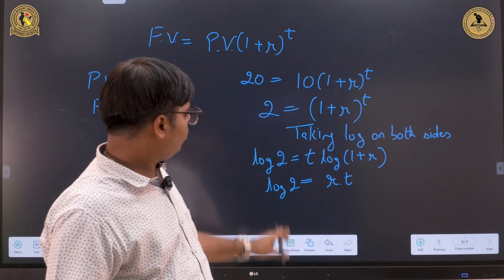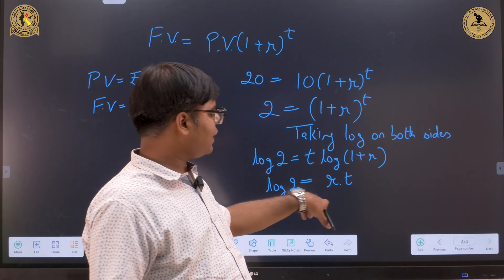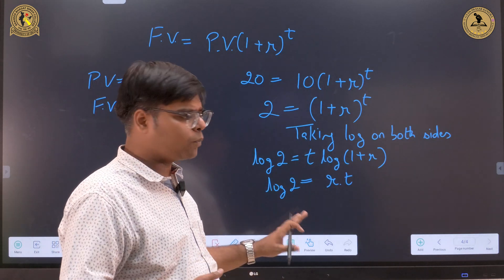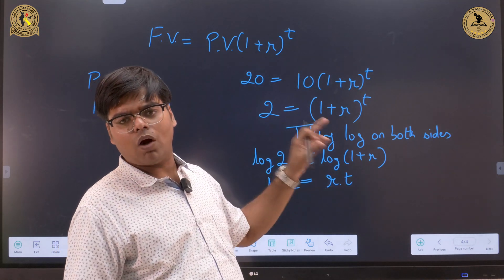Now we will take logarithm on both the sides. Taking logarithm on both sides, it will be log 2 equals t log (1 + r), which means rt. We have simply applied the logarithm properties to compute this final figure of log 2 equals rt.